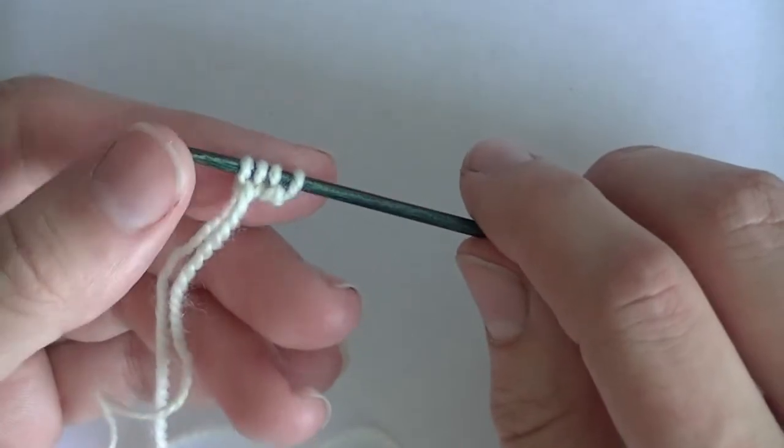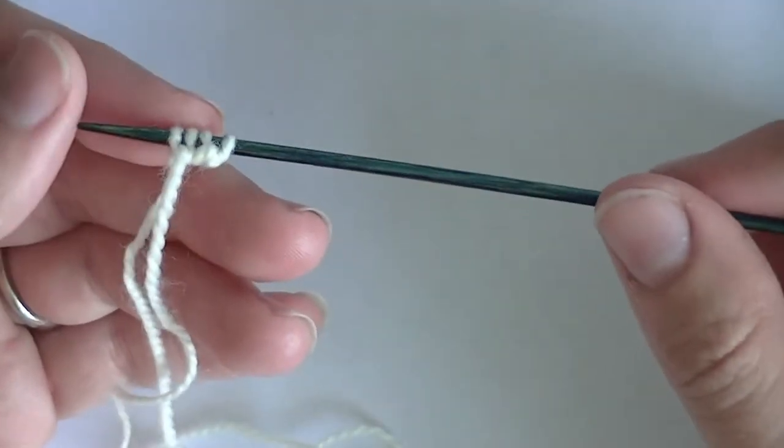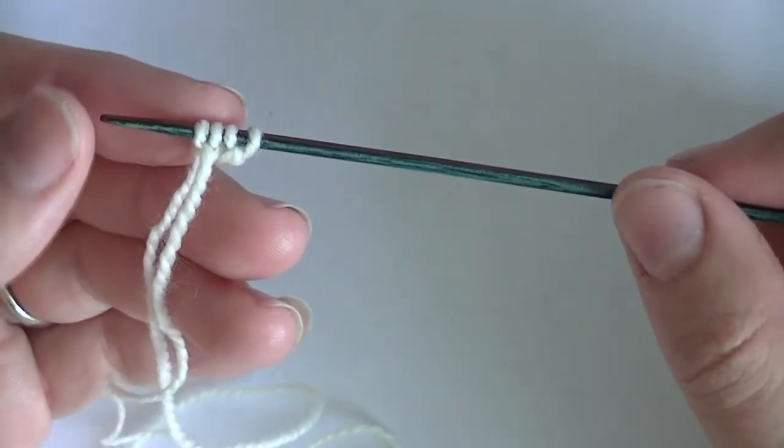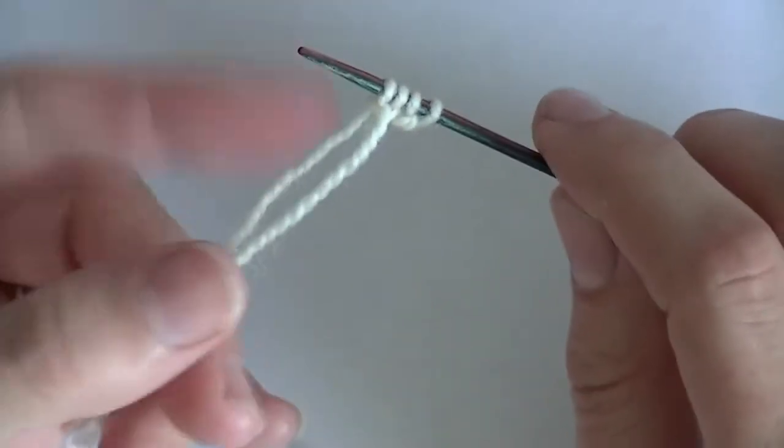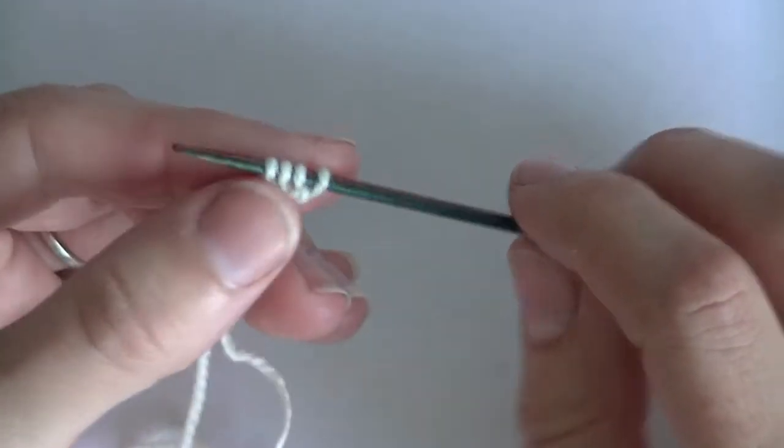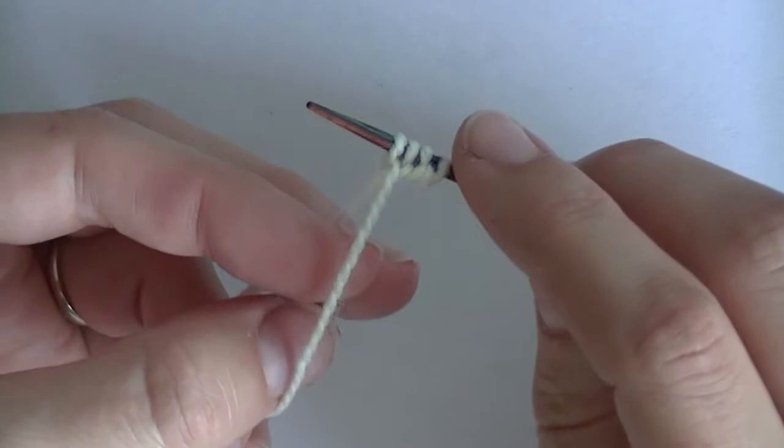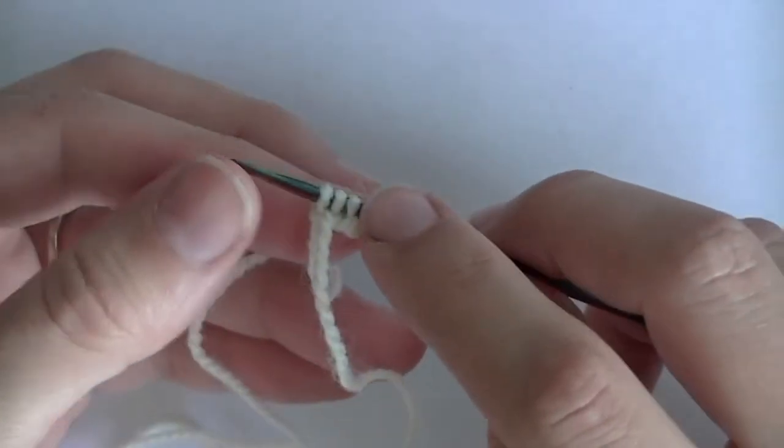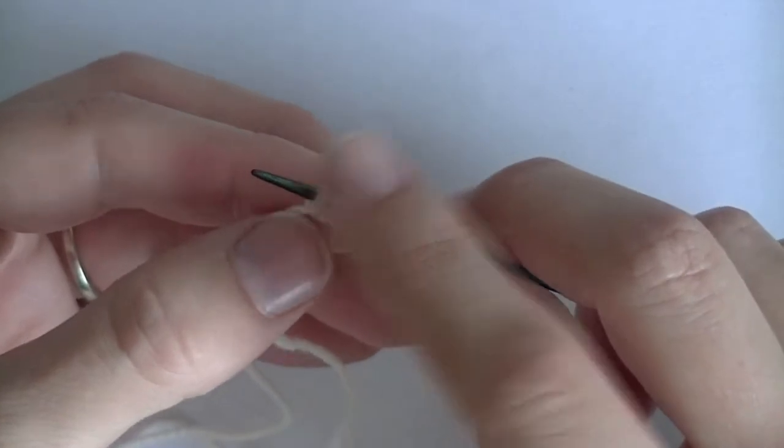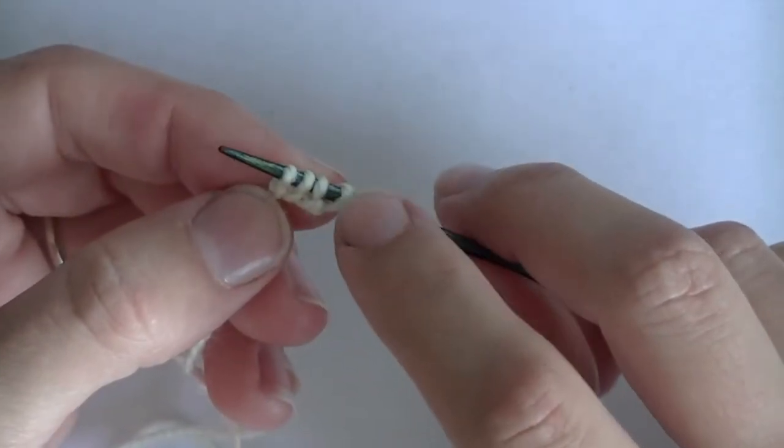To knit I-Cord you're going to need two DPNs. You cannot do this method with any other type of needle. So grab your DPN and whatever coordinating size yarn that you need to do your I-Cord. You're going to do a long tail cast on to cast on the number of stitches that you need for your I-Cord. So for today I'm just going to be doing four stitches.